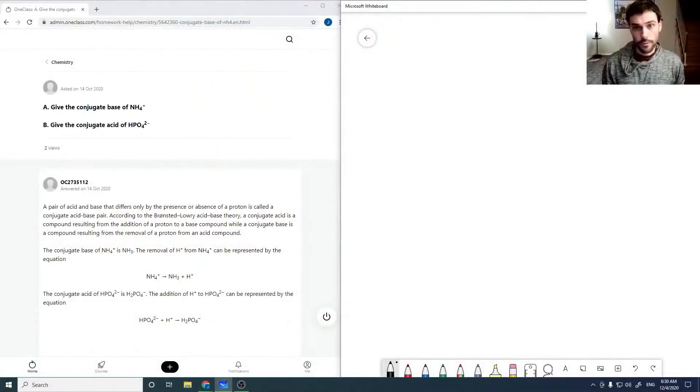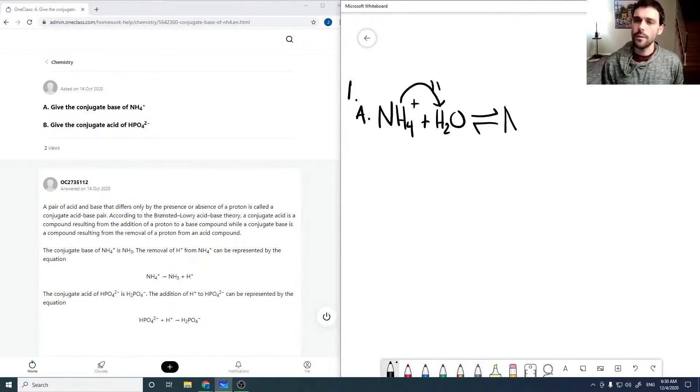So here's our first question. It's two parts. Give the conjugate base of NH4+. Our acid-base reaction with NH4+ is going to be with water, and we're going to transfer hydrogen to get NH3 plus H3O+.